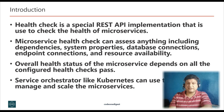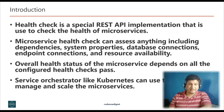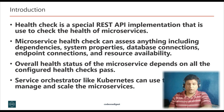Sometimes a service instance can be incapable of handling requests yet still be running. For example, it might have run out of database connections. When this occurs, the monitoring system should generate an alert. Also, the load balancer or service registry should not route the request to the failed service instance. So how do we detect that a running service instance is unable to handle a request?